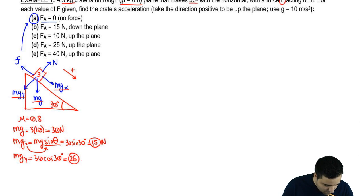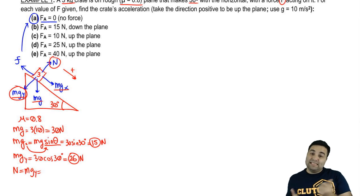mgy is 30 cosine of 30. And if you plug this into the calculator, it rounds to 26. Newtons and Newtons. Rounds to 26. Normal, in this case, is the same as mgy because these are the only two forces in the y-axis. So they have to exactly cancel each other. So normal is 26 as well. These are all the forces.